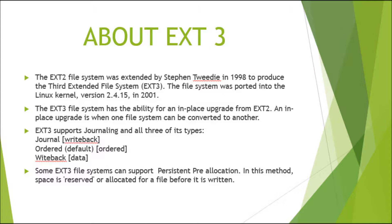ext3 — the third extended file system — was developed by Stephen Tweedie in 1998. It was ported into the Linux kernel version 2.4.15 in 2001. ext3 has the ability for an in-place upgrade from ext2, meaning one file system can be converted to another. ext3 supports journaling in all three of its modes: writeback, ordered, and data.